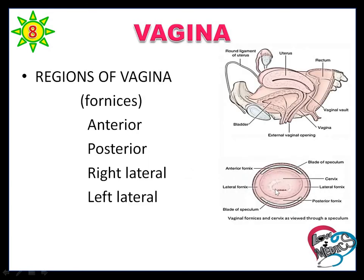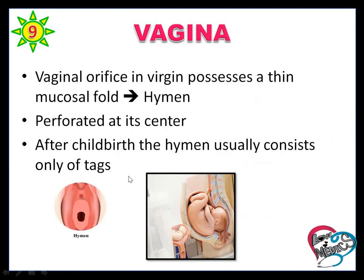The upper half of the vagina is located above the pelvic floor and the lower half is present within the perineum. Regions of the vagina with fornices are anterior, posterior, right lateral, and left lateral. The vaginal orifice in virgin girls has a thin mucosal fold called the hymen. Normally it is perforated at its center. After childbirth, the hymen usually consists only of tags.